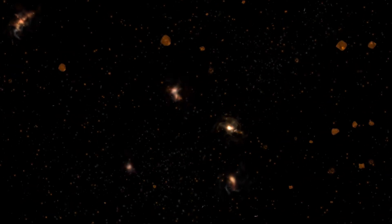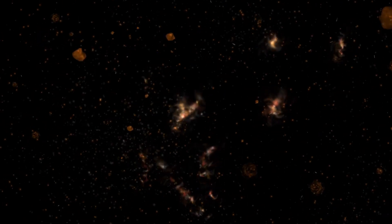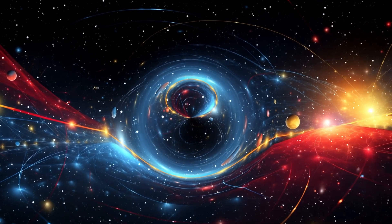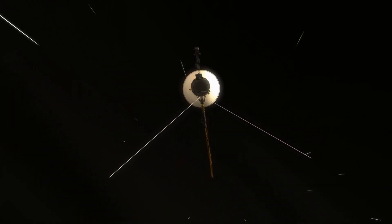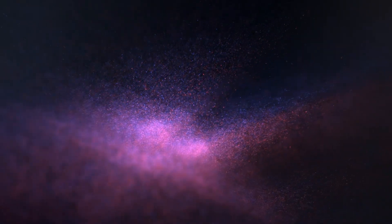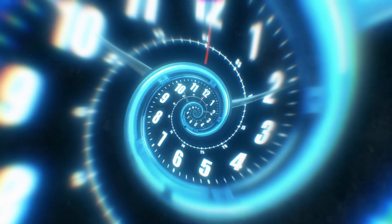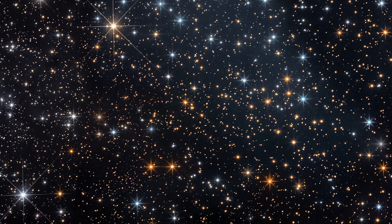Some galaxies shine brighter than physics allows. Starburst regions where stars are forming at furious rates are appearing far too early. In one case, a galaxy just 300 million years after the Big Bang showed signs of metal-rich stars. But where did those metals come from? Metals in space are formed through stellar death—supernovae that spew heavy elements into the cosmos. That takes time. Yet here they are, already present.